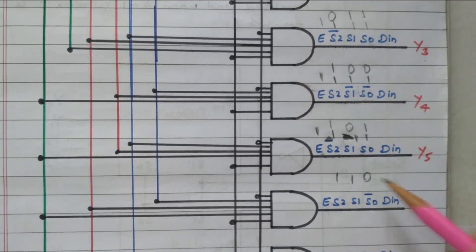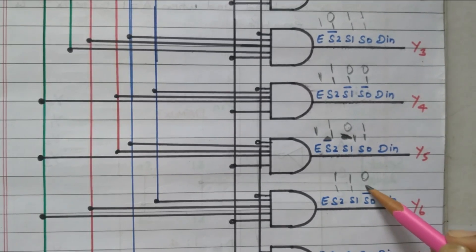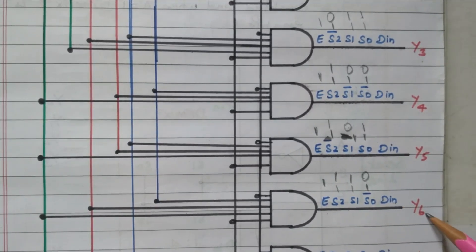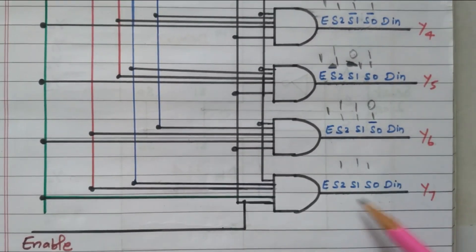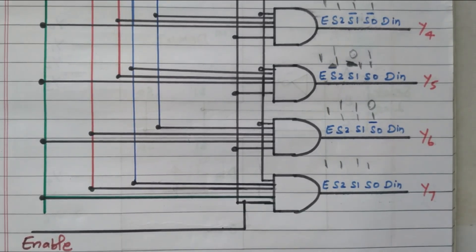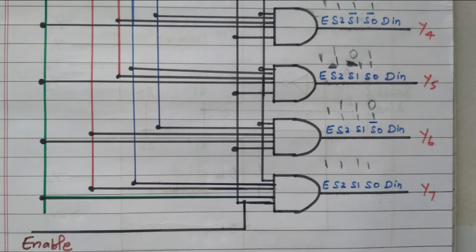For the combination 1,1,0: S2 as-is (1), S1 as-is (1), S0_bar converts 0 to 1, enable is 1 — so Y6 = D_in. For 1,1,1: all selection lines directly connected as-is (all 1), enable 1 — Y7 = D_in. So out of 8 outputs, only one data input is available based on the selection line. For 0,0,0 data is at the first position; for 0,0,1 it is at the second position, and so on up to 8 positions. The selection lines are connected either directly or with complement so that all AND gate inputs become 1 for the selected output.